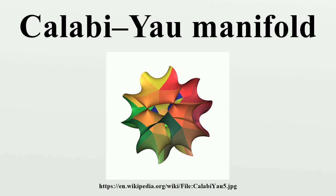One example of a three-dimensional Calabi-Yau manifold is a non-singular quintic three-fold in CP^4, which is the algebraic variety consisting of all the zeros of a homogeneous quintic polynomial in the homogeneous coordinates of CP^4. Another example is a smooth model of the Barth-Nieto quintic. Some discrete quotients of the quintic by various Z_5 actions are also Calabi-Yau and have received a lot of attention in the literature. One of these is related to the original quintic by mirror symmetry. For every positive integer N, the zero set of a non-singular homogeneous degree N+2 polynomial in the homogeneous coordinates of CP^{N+1} is a compact Calabi-Yau N-fold. The case N=1 describes an elliptic curve, while N=2 gives a K3 surface. All hyperkähler manifolds are Calabi-Yau.